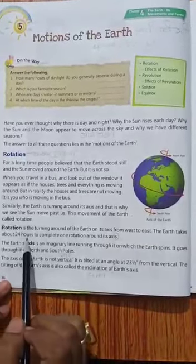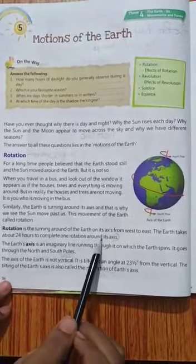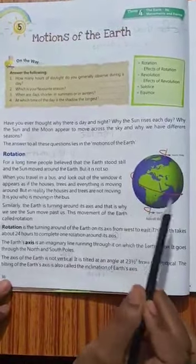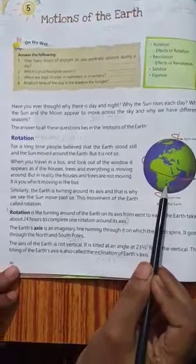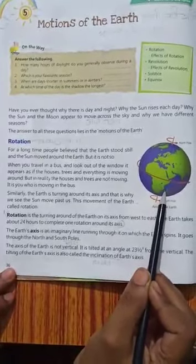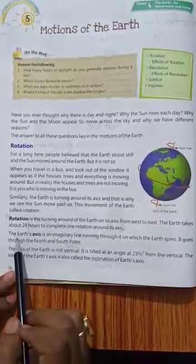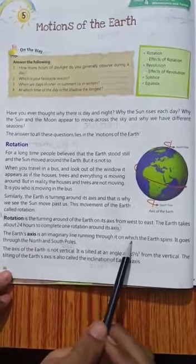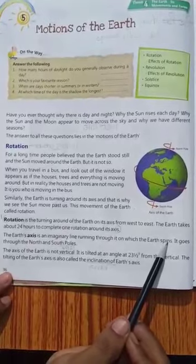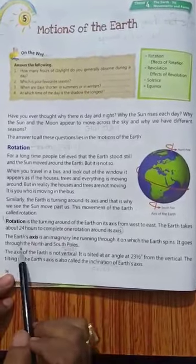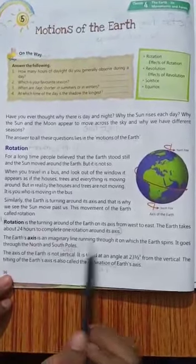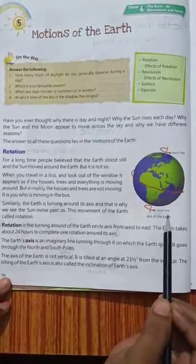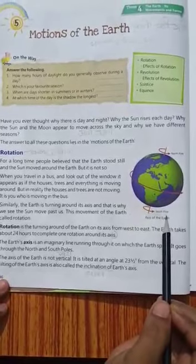The earth takes about 24 hours to complete one rotation around its axis. Yeh apne axis pe, one rotation ko complete karne meh, isko kitna time lagta hai? 24 hours, 24 ghante isko lagtai hai. The earth axis is an imaginary line running through it on which the earth spins. It goes through the north and the south pole. See, in this diagram, this is the north pole and this is the south pole. Thik hai, these are the imaginary lines.